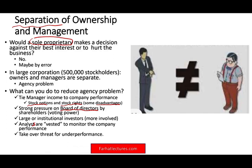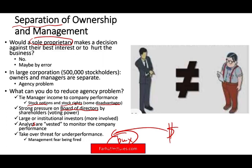Another way to reduce the agency problem is the threat of a takeover for underperformance. When managers are running down a company that should be doing well, other people with money will come in, buy the company, and fire the management. Management doesn't like this. The threat of a takeover reduces the agency problem because managers want to make sure they're doing a good job so no one buys the company because it's undervalued or underperforming and fires them.